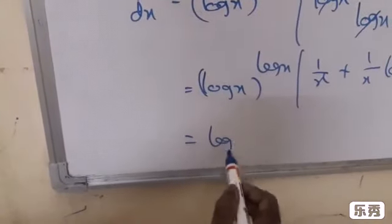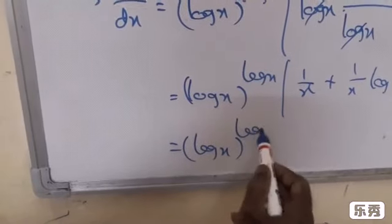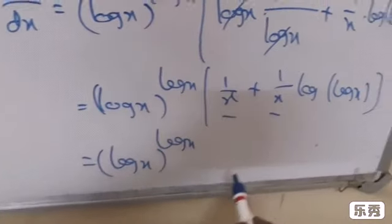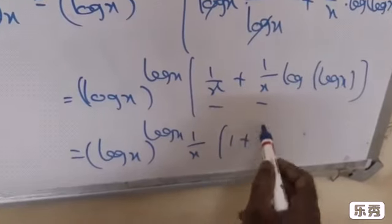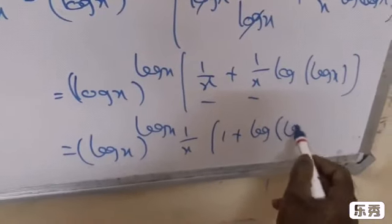So finally (log x)^(log x). Observing here, we have 1/x in common. Taking 1/x common: (1/x)[1 plus log(log x)].